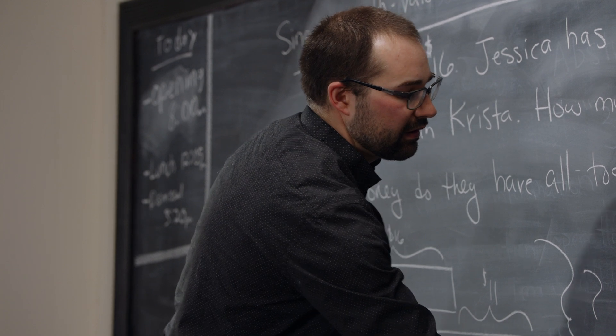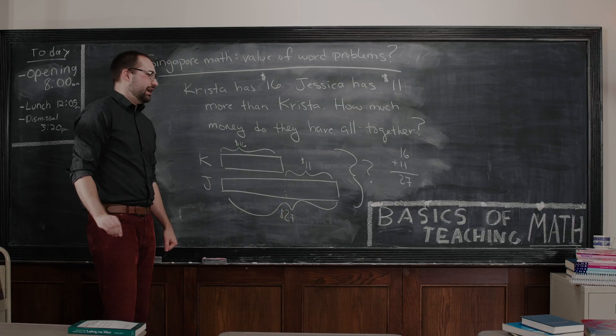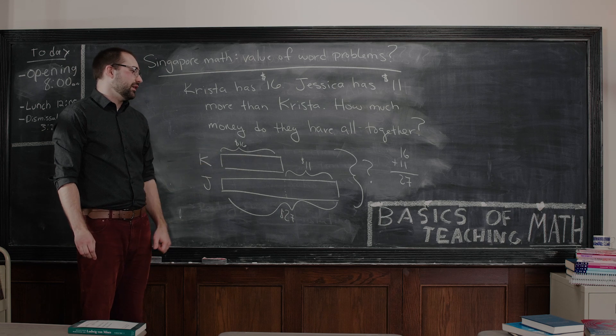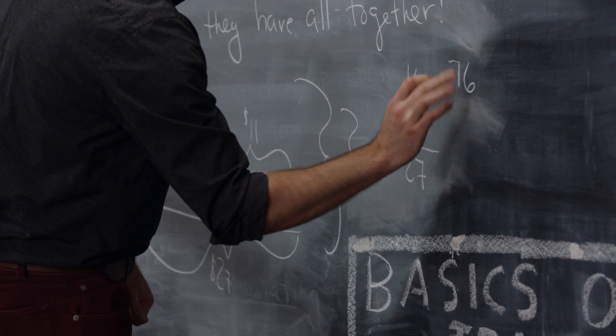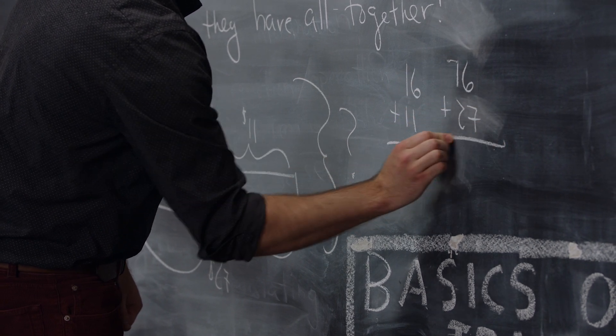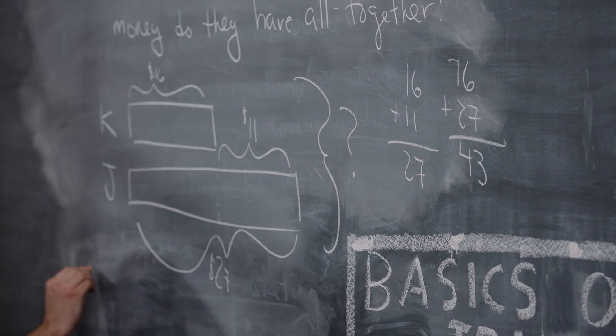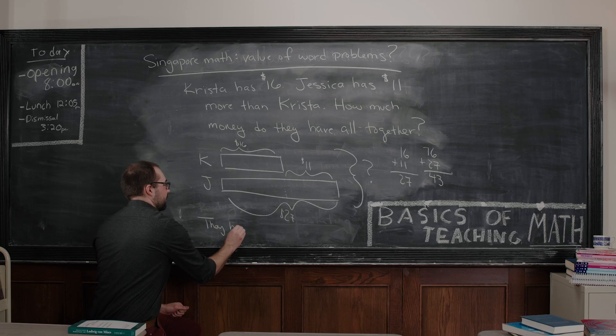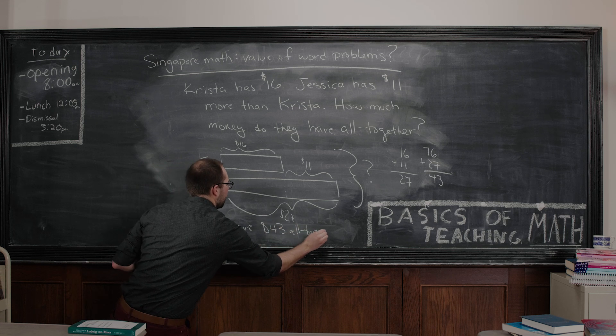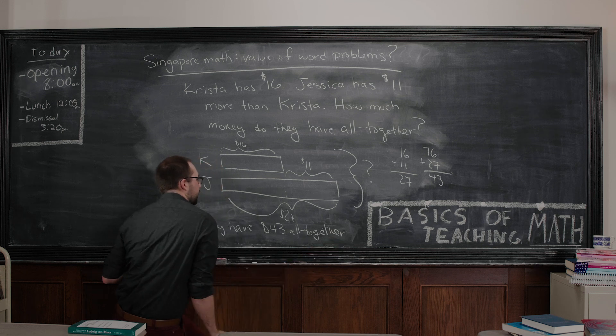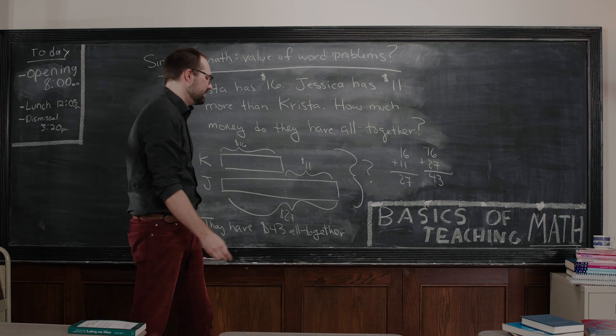And then we might actually then progress and figure out the question mark here where we would do 16 plus 27, giving us $43. We might finish off just by saying they have $43 all together.